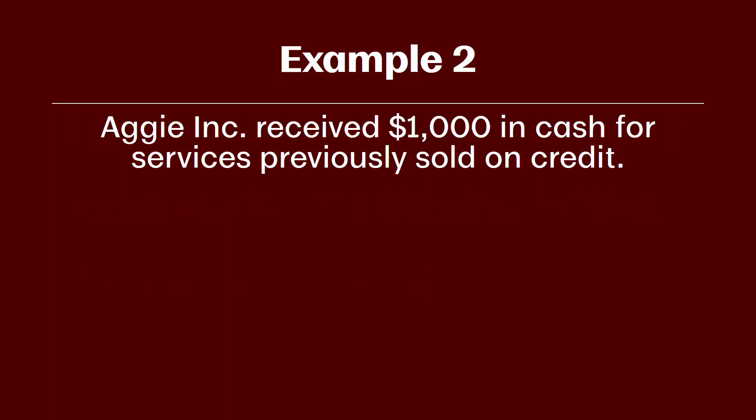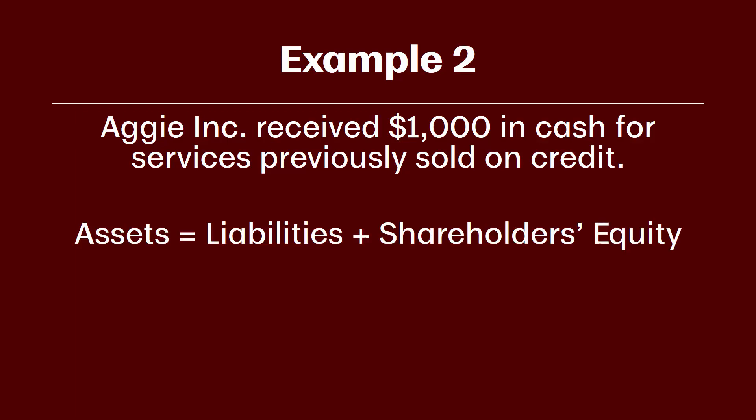In our next example, let's assume Aggie received $1,000 in cash for services previously sold on credit. Notice the connection to the last problem: in the last example we recorded the sale on credit and recorded accounts receivable. Now we're actually going to collect cash for that accounts receivable. We're only recording the receipt of cash — we don't need to re-record the actual sale on credit because that happened in a previous transaction already recorded.